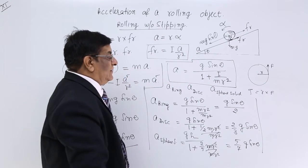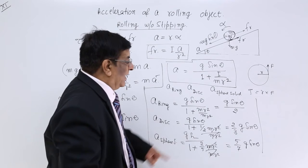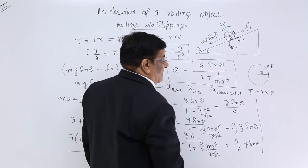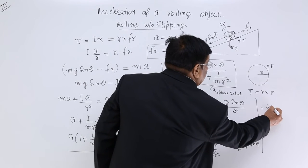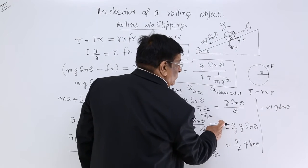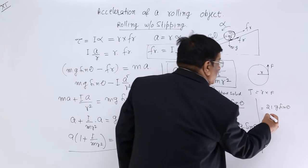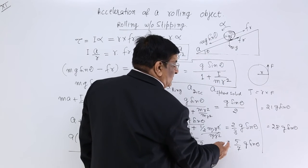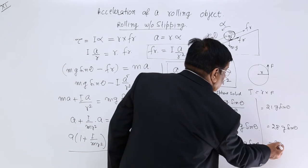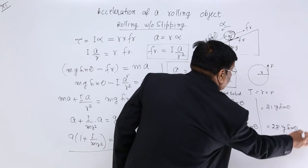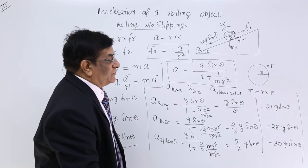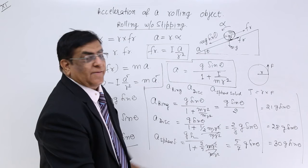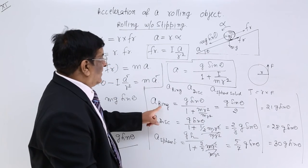To compare the three accelerations — g sin theta over 2 for the ring, 2/3 g sin theta for the disc, and 5/7 g sin theta for the sphere — multiply all by 42: ring gives 21, disc gives 28, sphere gives 30. So the solid sphere has the largest acceleration and comes down fastest, while the ring is slowest.